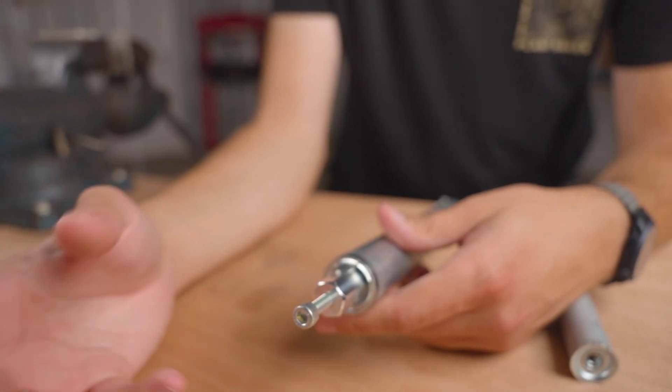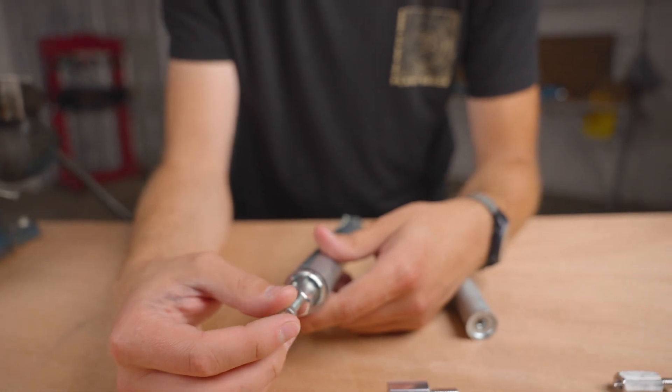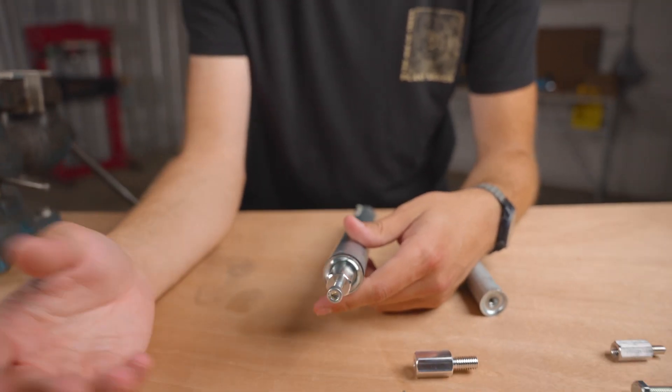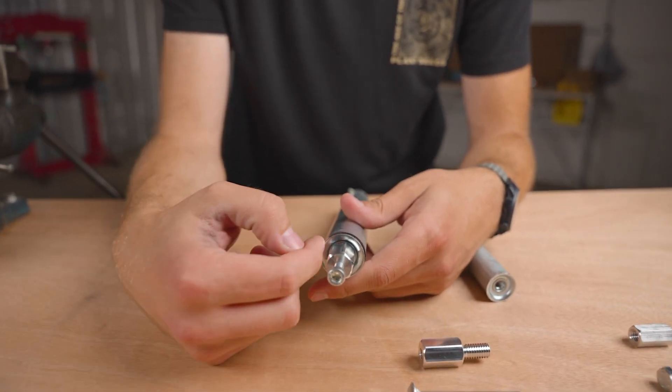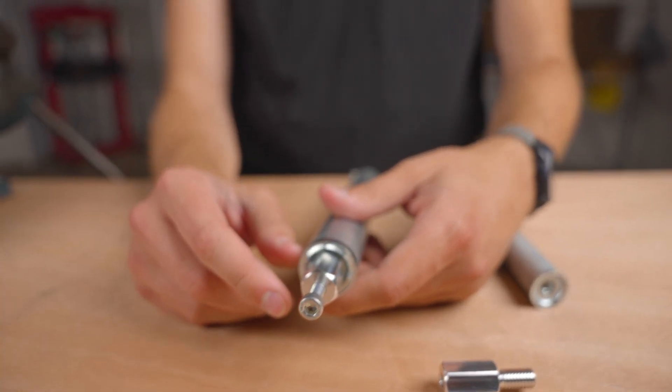So you could do all kinds of cool stuff in your builds where you have an M6 bolt that goes all the way through a connector and then maybe into a piece of conduit. There's all kinds of possibilities there.